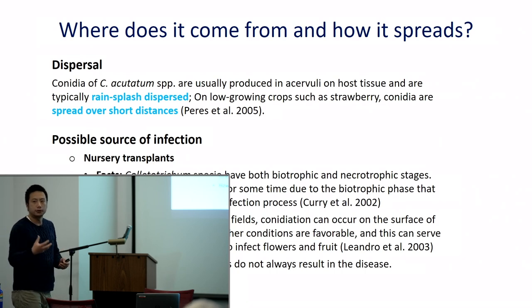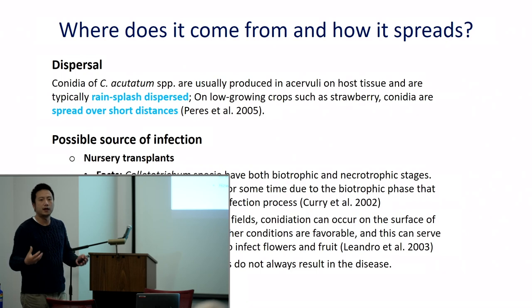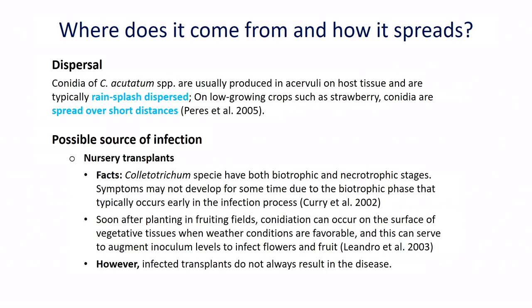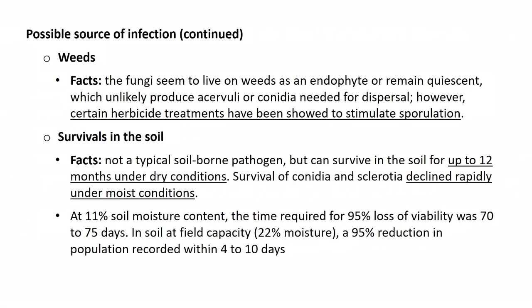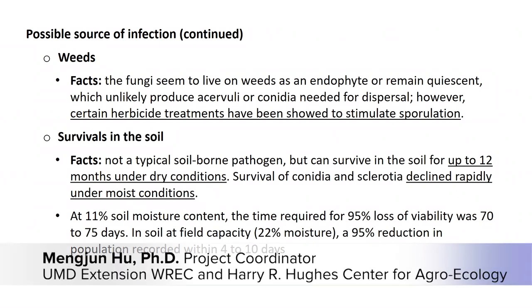The problem is that when you have transplants that look perfectly fine right after planting, under the right conditions the disease starts to show up — and that's very frustrating. Other possible sources of infection include weeds. The fungi can also live in weeds as endophytes and stay in weeds without causing any issues — they're asymptomatic.